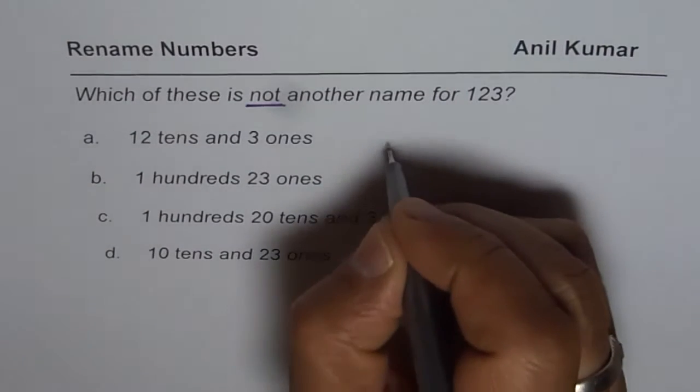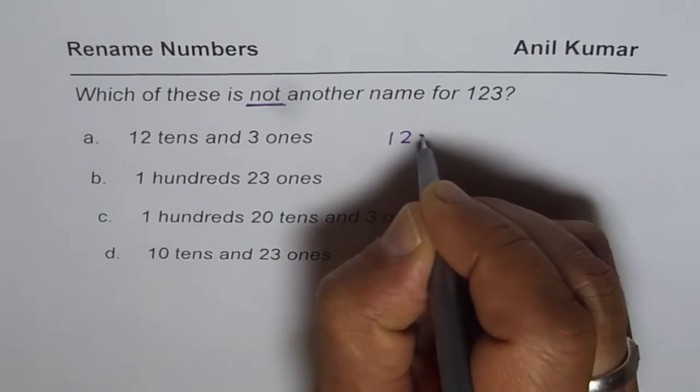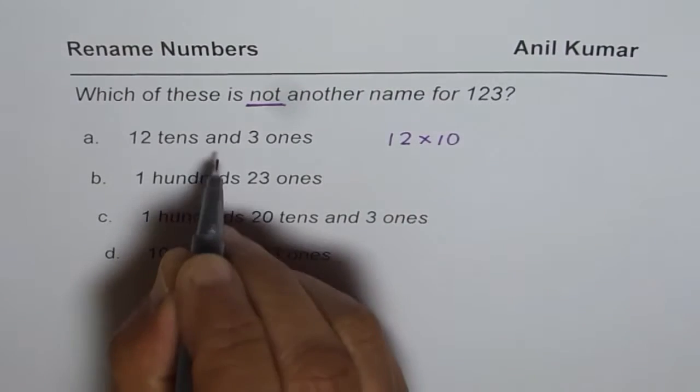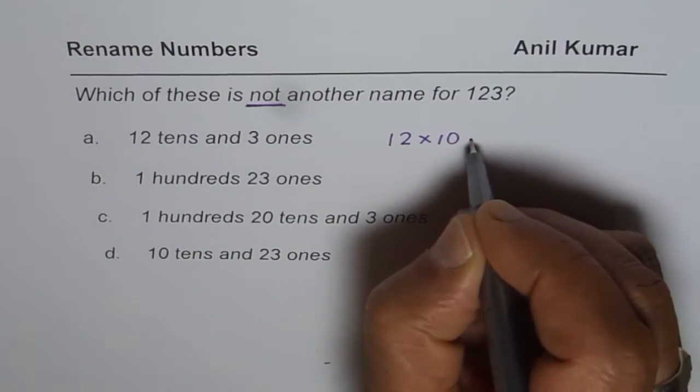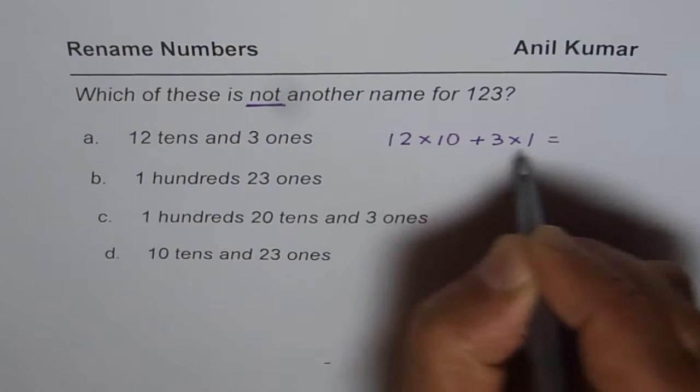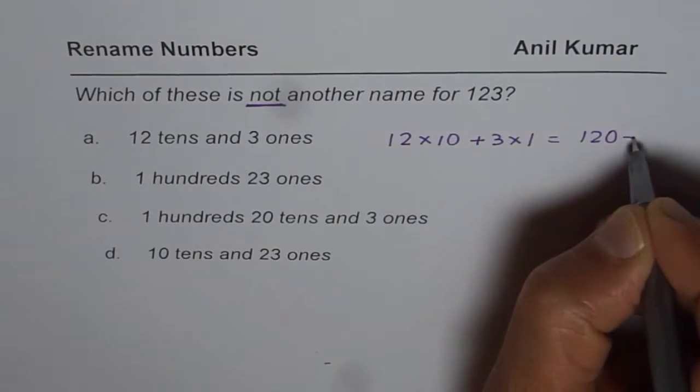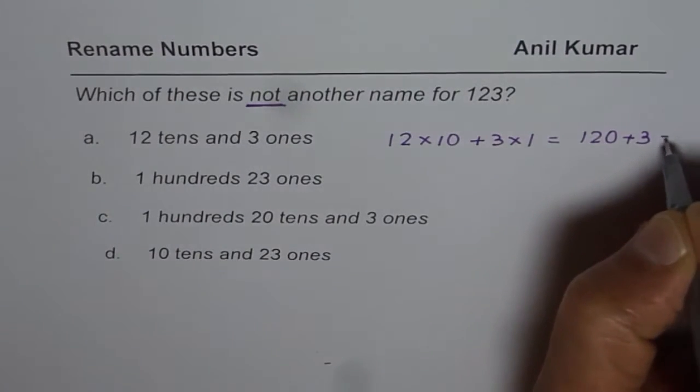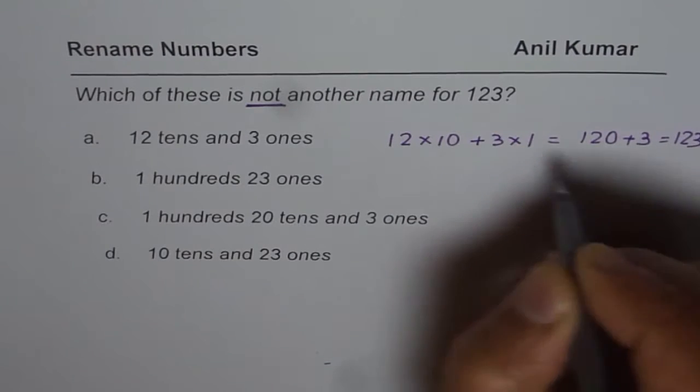12 tens. So when I say 12 tens, it means 12 times 10, and 3 ones means plus 3 times 1, and that is 120 plus 3, which is 123. So this is okay, correct?